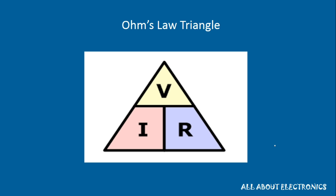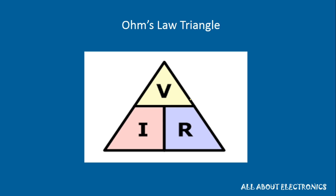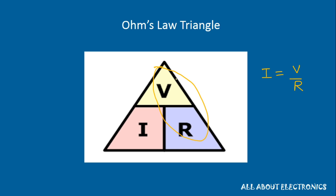Ohm's law is a relationship between voltage, current, and resistance. If you know any two of the three quantities, you can find the third. If you know current and resistance, voltage is V = I × R. If you know voltage and current, resistance is R = V/I. And current is I = V/R.